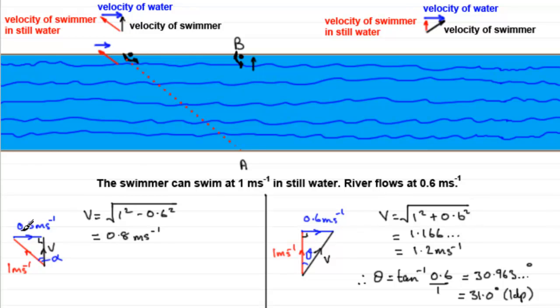So, sine of alpha equals opposite over hypotenuse, 0.6 over 1. So, therefore, alpha must be equal to the inverse sine of 0.6 over 1. And if you work that out, you end up with 36.869 and so on degrees. And if we round that to one decimal place, it's going to be 36.9 degrees to 1 dp.